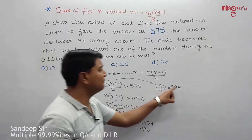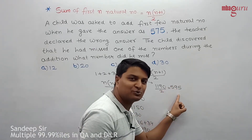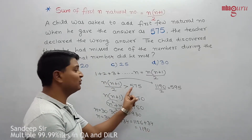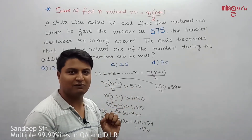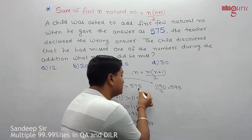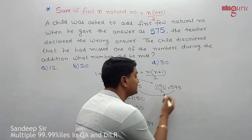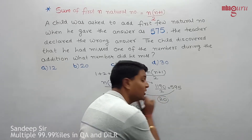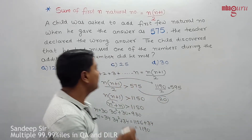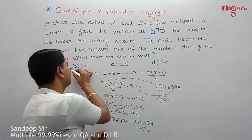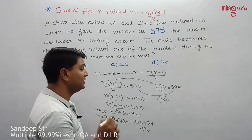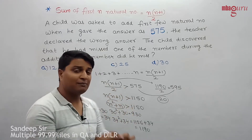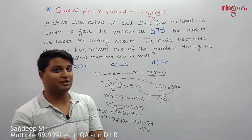The correct sum is 595, but the child got 575. So the number he missed is 595 - 575 = 20. The missing number was 20.